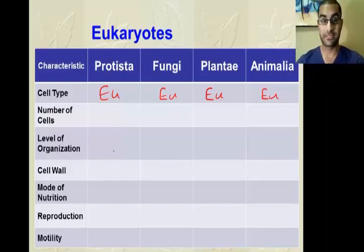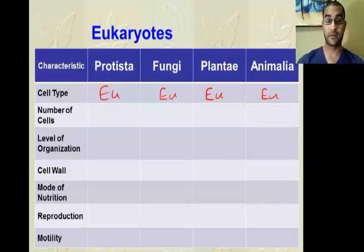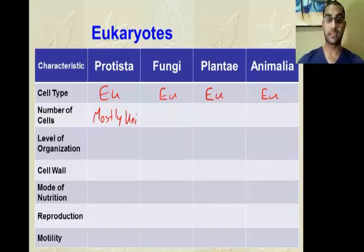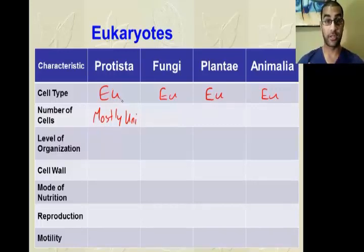For number of cells: kingdom Protista is almost all unicellular. If you find an organism that's eukaryotic but unicellular, there's a good chance it falls into this kingdom. That one cell is a lot more advanced because it's eukaryotic — a lot more organelles, more advanced function. Kingdom Fungi is the opposite of Protista; the majority of kingdom Fungi is multicellular, though there are some unicellular examples like yeast.